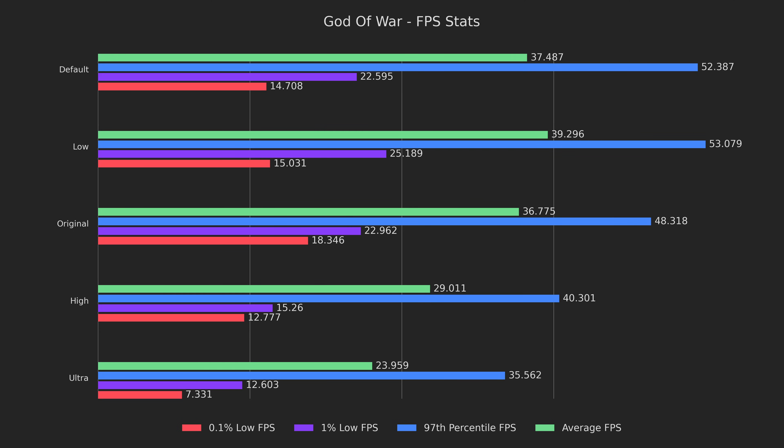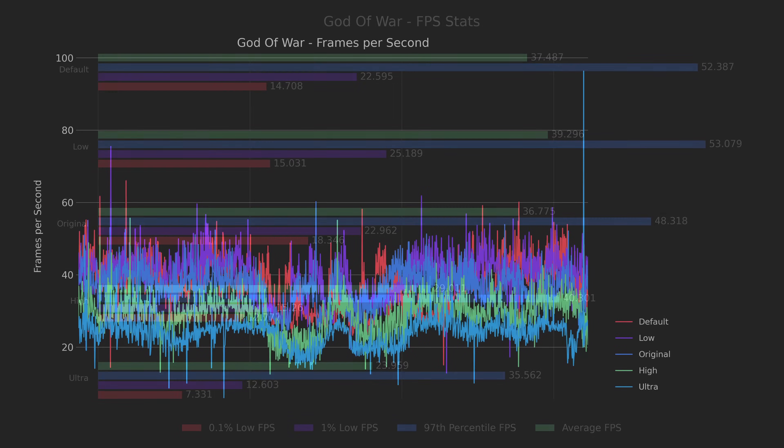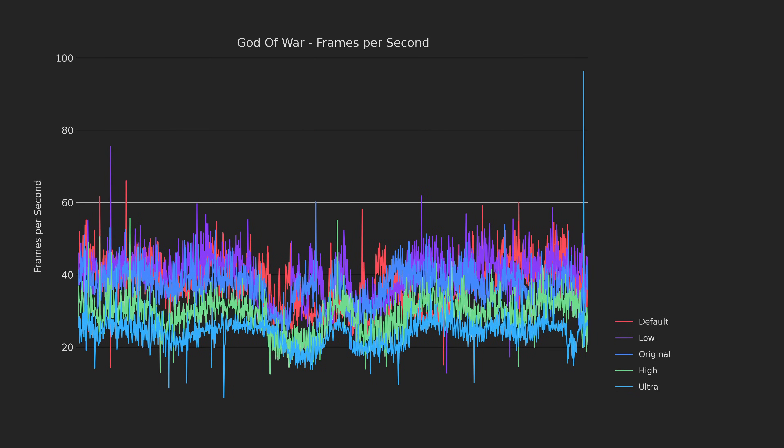Looking at the rest of the graph, we can see that high settings are technically playable most of the time, and ultra is unplayable at all times, even causing the menu to freeze up prior to loading into game. Moving into a time series graph, we can see that even during calm segments there are wild variations, with the framerate being incredibly unpredictable.